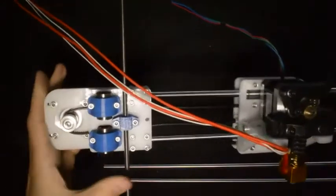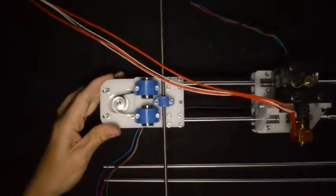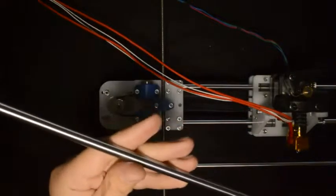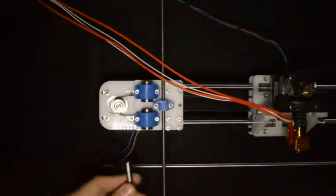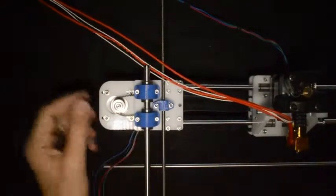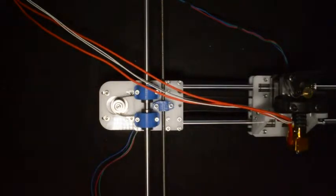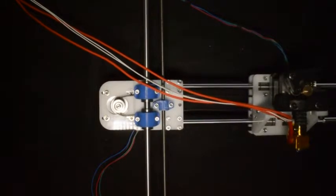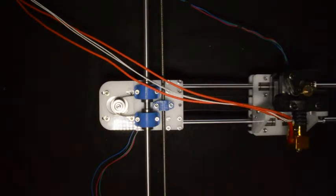When you are done with that, your assembly should look something like this. The final step is to insert the linear rods. Again, make sure your rods are clean and there are no sharp edges where you insert them. Now you can place the Z carriage to the side for later use.